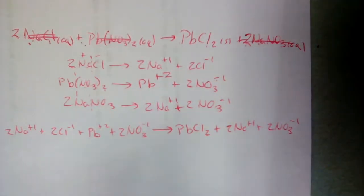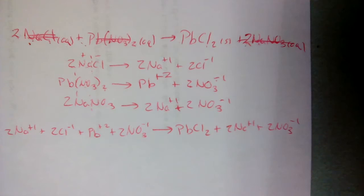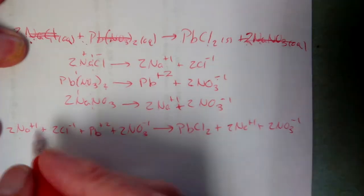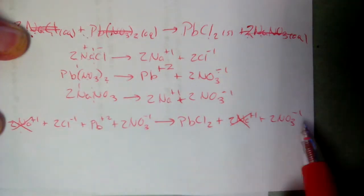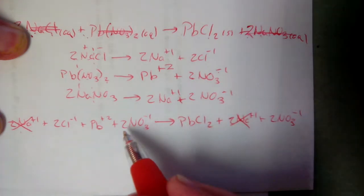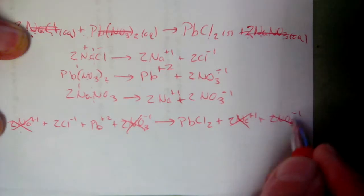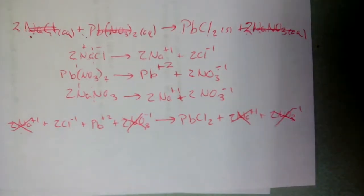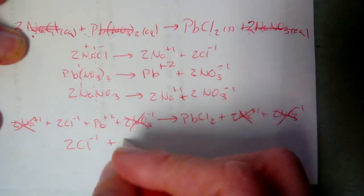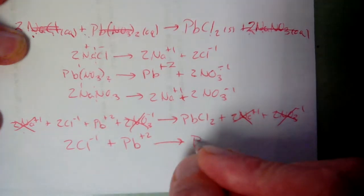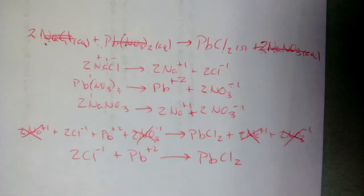Next step: cross out the spectator ions — ions found on both sides of the arrow. 2 Na⁺ on the left and 2 Na⁺ on the right — spectator, cross it out. 2 Cl⁻ on the left but no Cl⁻ on the right — leave it. Pb²⁺ on the left but none on the right — leave it. 2 NO3⁻ on both sides — spectator, cross it out.